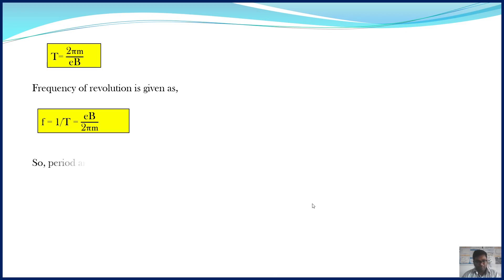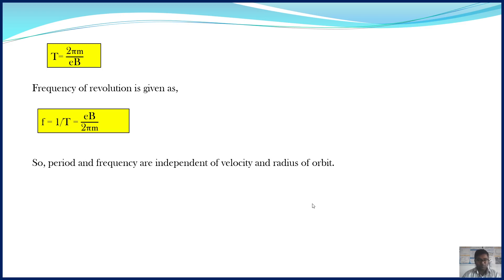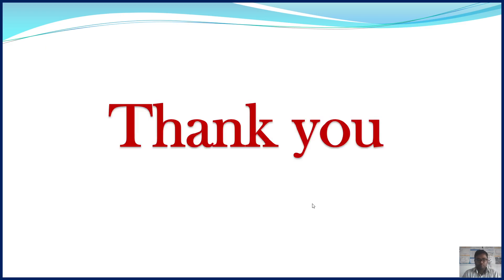Period and frequency are independent of velocity and radius of the orbit. The conclusion is: whenever an electron is moving through a perpendicular magnetic field, that electron performs circular motion, and the radius depends on both the mass and the velocity. Thank you.